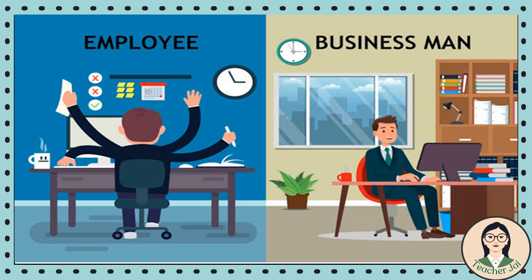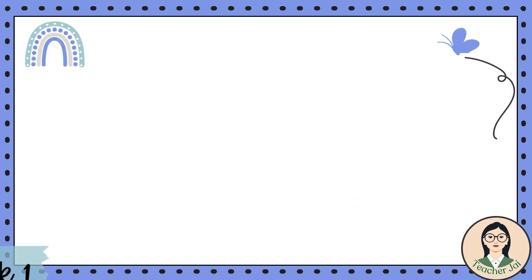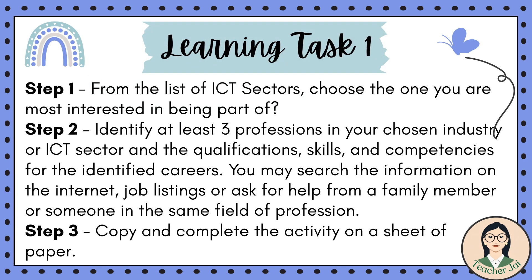Now, I want you to think about the existing ICT sectors in your community. Take a moment to fill out the table for learning task number one. Step one: from the list of ICT sectors, choose the one you are most interested in being part of. Step two: identify at least three professions in your chosen industry or ICT sector and the qualifications, skills, and competencies for the identified careers. You may search the information on the internet, job listings, or ask for help from a family member or someone in the same field of profession. Step three: copy and complete the activity on a sheet of paper.